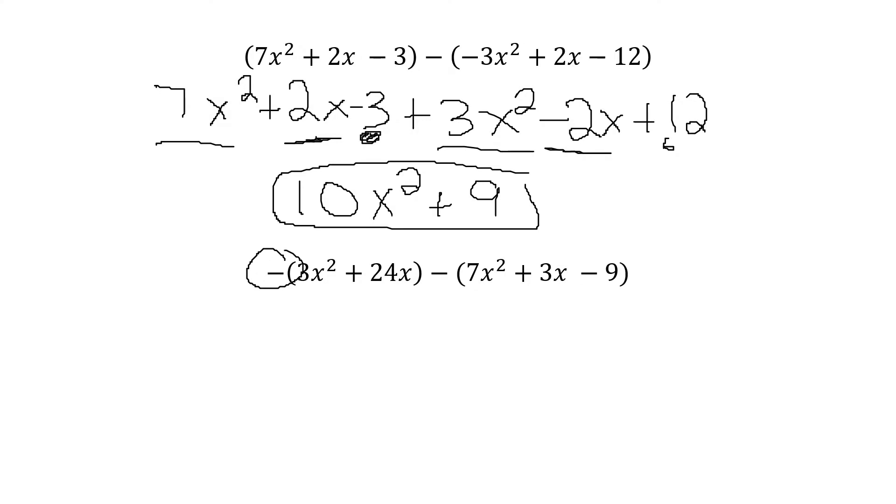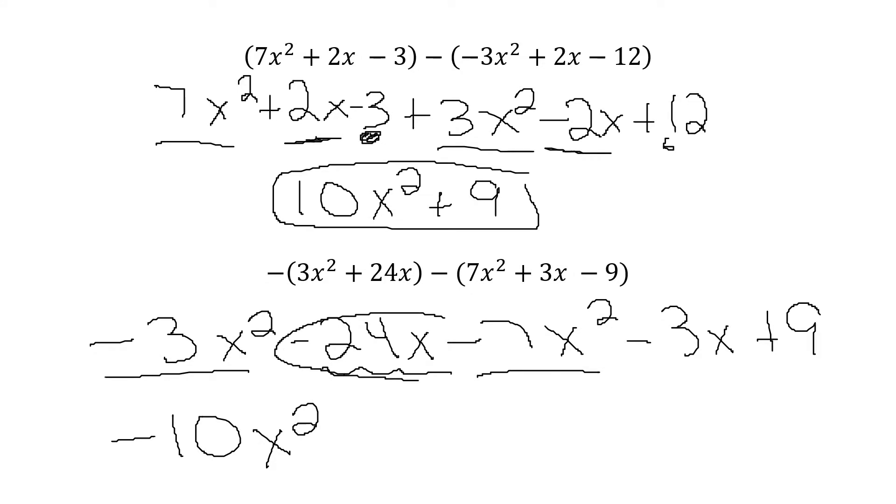Now, let's look at this last one. There's a negative out here. That means all of those signs have to change. There's a negative here, so all of those signs have to change. My positive 3x squared is going to become minus 3x squared, minus 24x, minus 7x squared, minus 3x, plus 9. Don't think of it as everything becoming negative. Think of it as signs changing, because this negative becomes a positive. Now, I add my like terms. Negative 3x squared minus 7x squared gives me negative 10x squared. Don't forget, the sign in front of your term stays with your term. So, negative 24 minus 3 gives me negative 27x, and here is my only number I've got there all by himself.